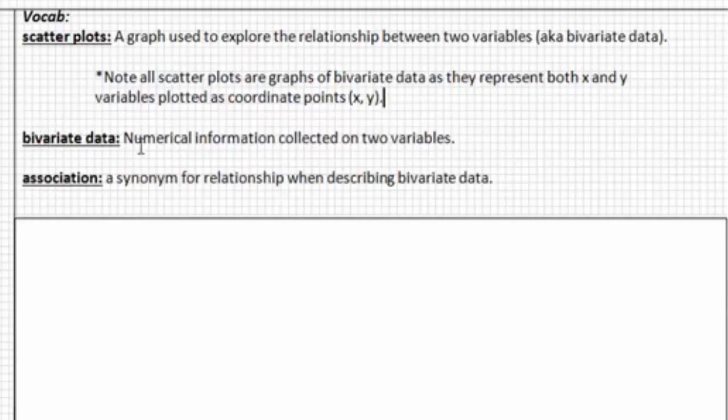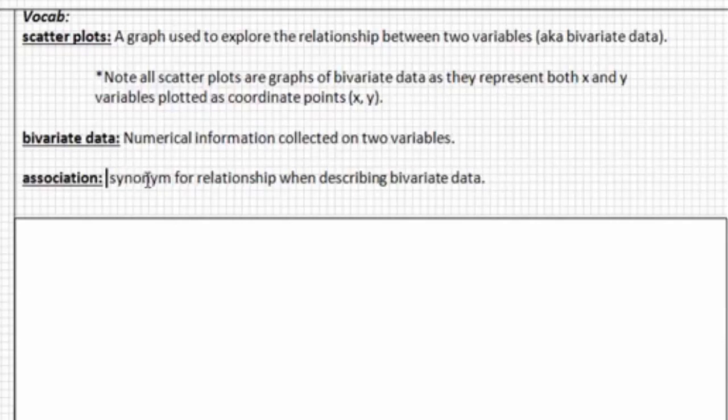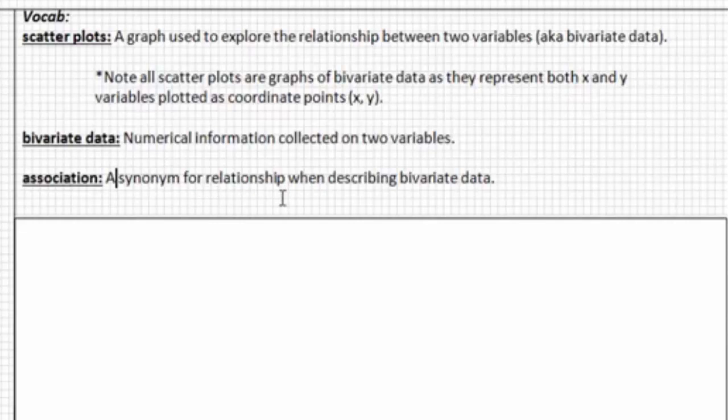Bivariate data then is numerical information collected on two variables. And association is essentially just a synonym that we're going to use for the word relationship when describing bivariate data. So those are our three new vocabulary terms: scatter plots, bivariate data, and association. Please take a moment to make sure that your vocab is all copied into your notes before moving on.